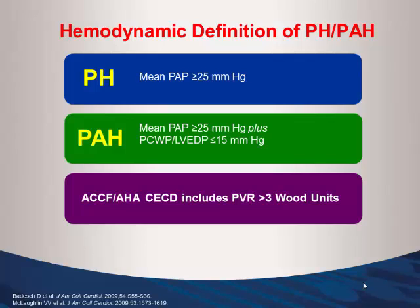We now know pulmonary hypertension implies a mean pulmonary pressure more than 25. PAH means that, but without evidence that the left side of the heart is causing problems. Anything else can increase your pulmonary artery pressure — COPD being an example — and if it's not left heart disease, it's not PAH but can still keep a normal wedge. Some institutions like the American College of Cardiology Foundation include PVR; we use PVR mostly for patients with liver disease needing transplantation.